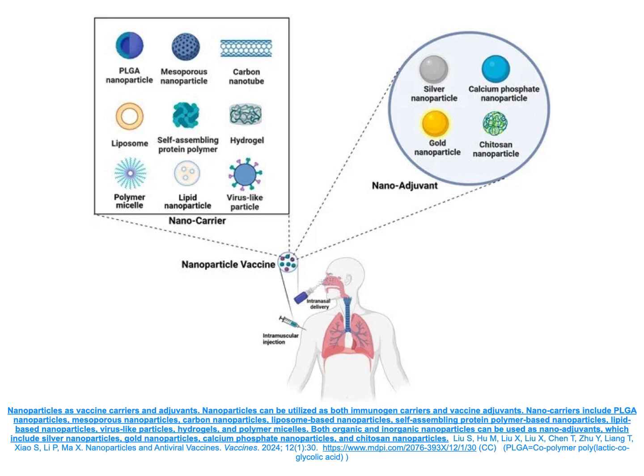Nanoparticles can be utilized as both immunogen carriers and vaccine adjuvants. Nanocarriers include PLGA nanoparticles, mesoporous nanoparticles, carbon nanoparticles, liposome-based nanoparticles, self-assembling protein polymer-based nanoparticles, lipid-based nanoparticles, virus-like particles, hydrogels, and polymer micelles. Both organic and inorganic nanoparticles can be used as nanoadjuvants, which include silver nanoparticles, gold nanoparticles, calcium phosphate nanoparticles, and chitosan nanoparticles.